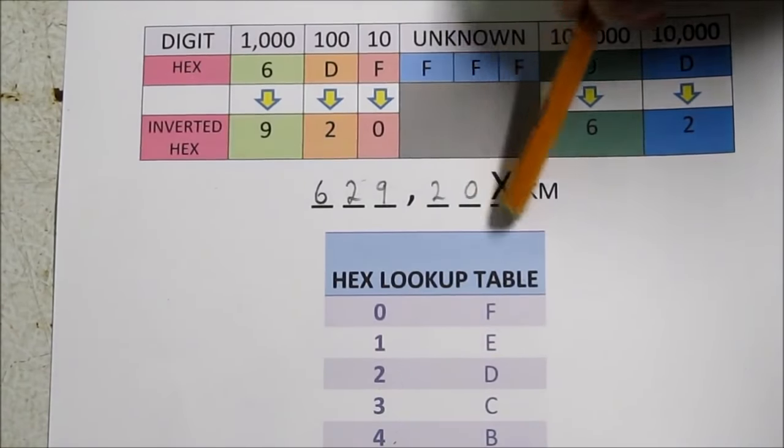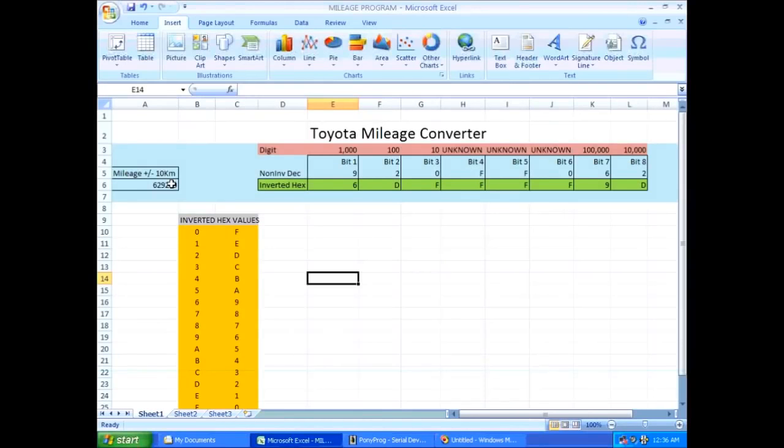I haven't yet figured out what controls the ones column. I've made a little excel sheet to find the inverted hex of this value. So I type in the mileage here. In my case it's 265,650 kilometers on my car. Click that and it gives me the inverted hex here. A9, AF, FF, and D9.